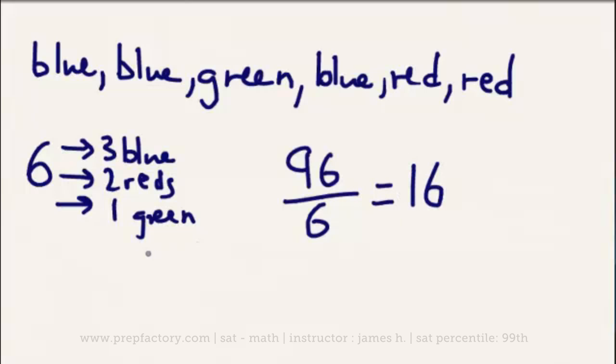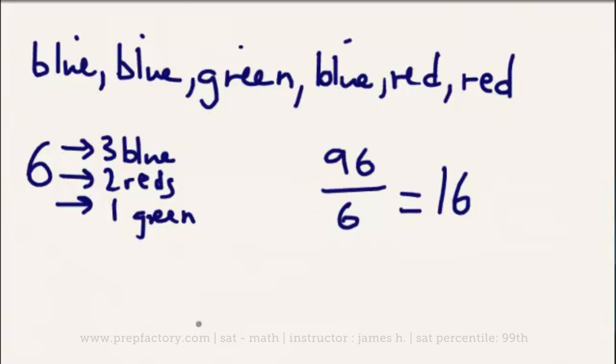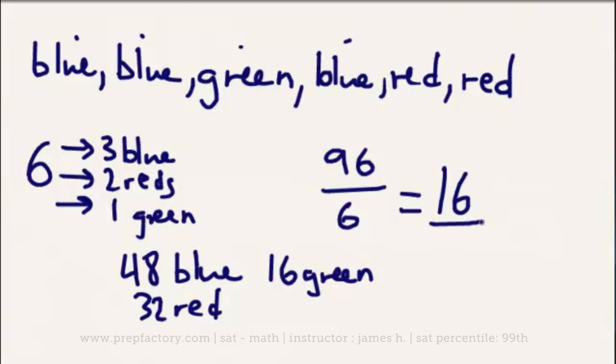Let's say there were 96 flags given out. How many times would this pattern have repeated? Well, 96 divided by 6 is going to equal 16. So our pattern is going to have repeated 16 times. So after 96 flags have been handed out, there's going to have been 48 blue flags, as well as 32 red flags given out after 96 flags, and there would have been 16 green flags given out.